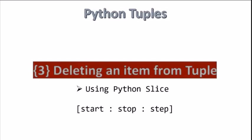We will create a new tuple which will not include the value from the previous tuple. For this work, we will use Python Slice. Python Slice is written down below. Let's see how we will do this.